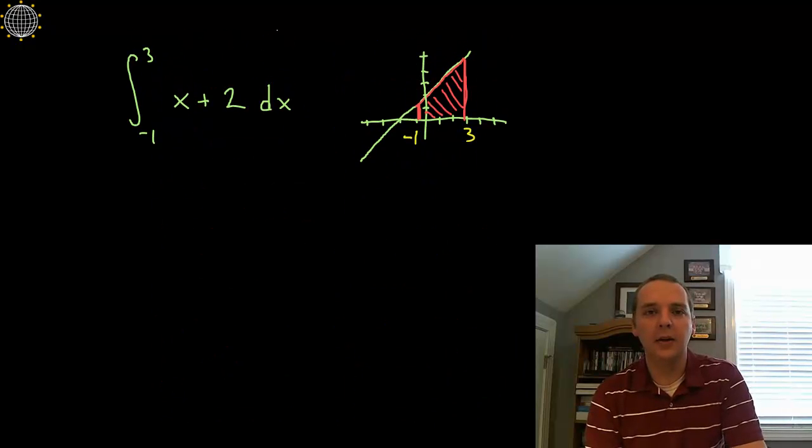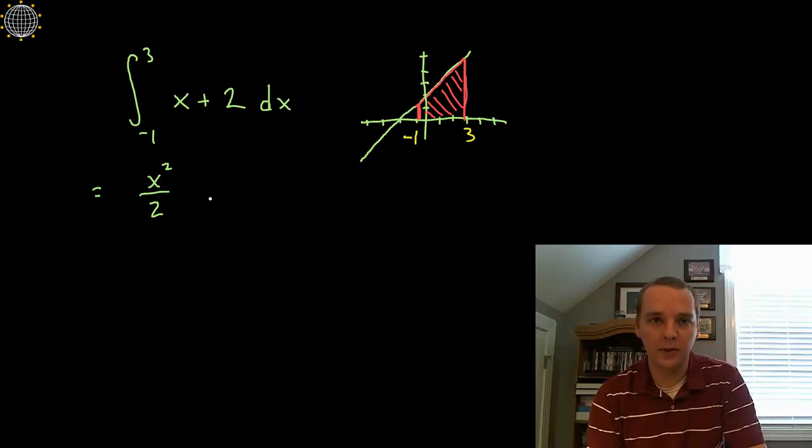Okay so let's do that. The anti-derivative of x plus 2, we can just integrate these independently from sum and difference rule. So the integral of x would be x squared over 2 using the power rule for integration, and the integral of 2 would be 2x for the constant rule of integration.